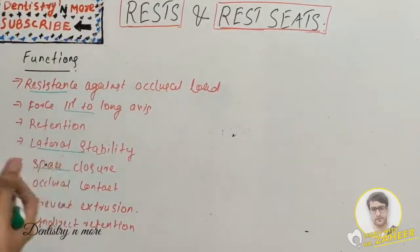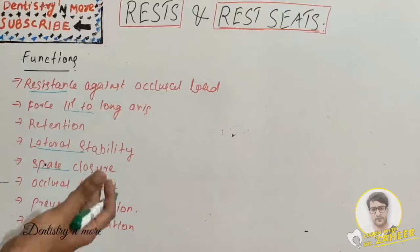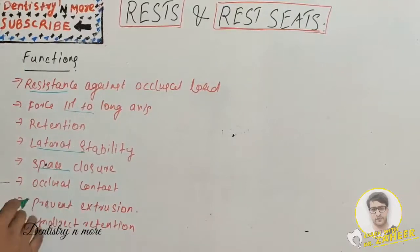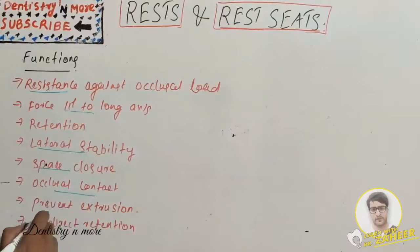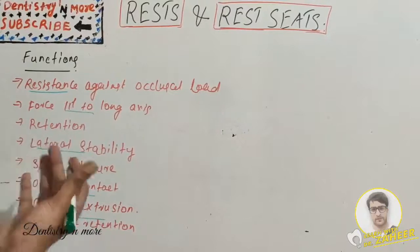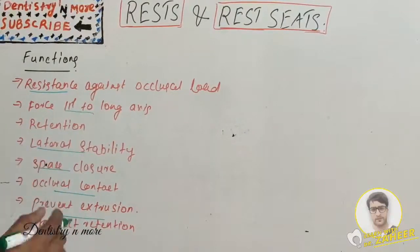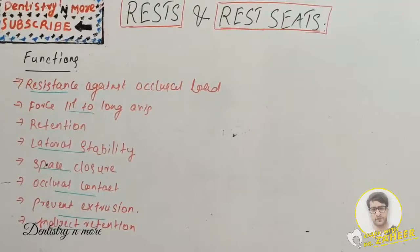Additional functions include: closing a small space between teeth by bridging the space using occlusal rest; maintaining occlusal contact with opposing teeth; preventing extrusion of abutment teeth; helping where tipping or rotation of a tooth has impaired functional occlusion; and providing indirect retention using auxiliary rest.